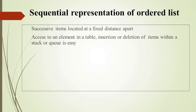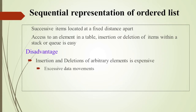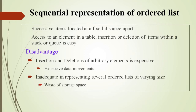In sequential representation of an ordered list, successive elements are located at a fixed distance. Accessing an element in a table, or insertion/deletion within a stack or queue, is easy. In a stack, last-in first-out means insertion and deletion are at one end. But if we want to insert or delete an arbitrary element, we need excessive data movement, so the time taken is more — it is expensive. Also, storing several ordered lists of varying size leads to wasted storage space, which makes sequential representation inadequate.